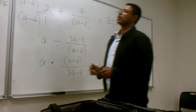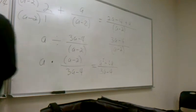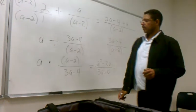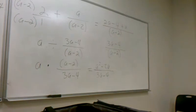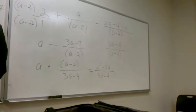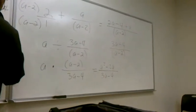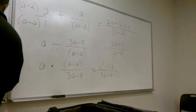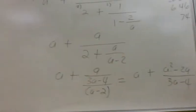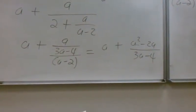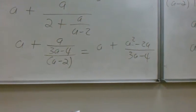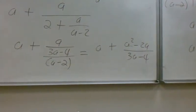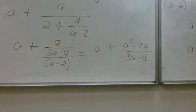Now we're going to move to step 4. We're going to break that whole side down. This is equal to a plus a squared minus 2a, all over 3a minus 4. The a is the numerator. One more step and we'll be done.